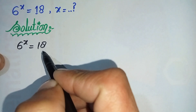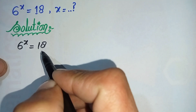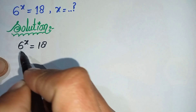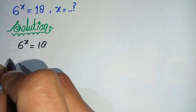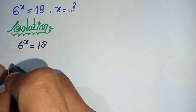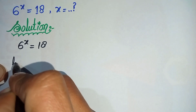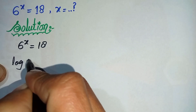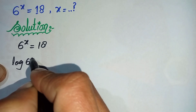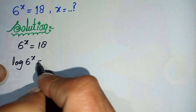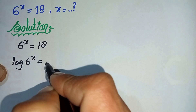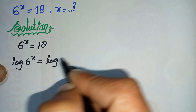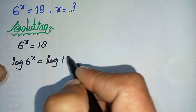To solve this question step by step, first of all we will take log on both sides. So log of 6 raised to power x is equal to log of 18.